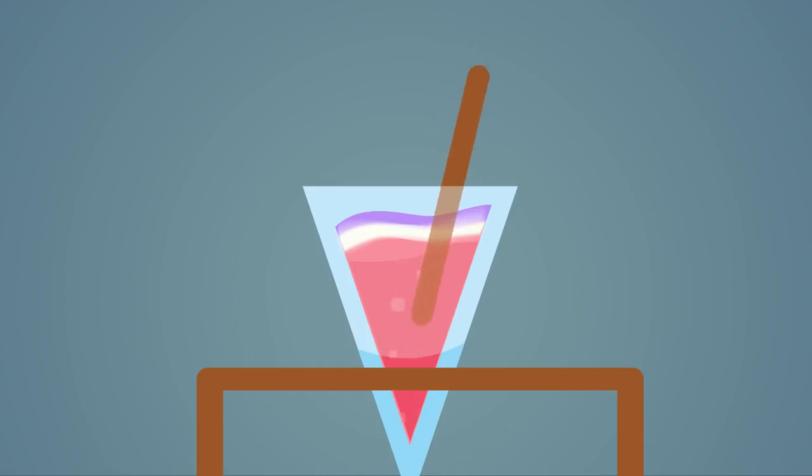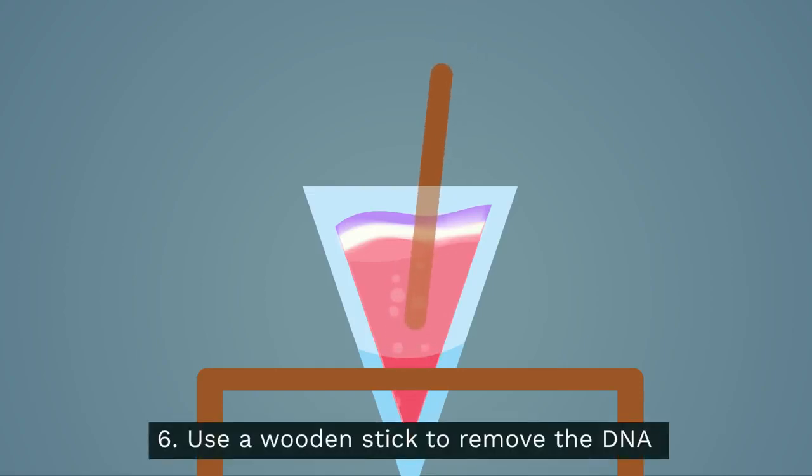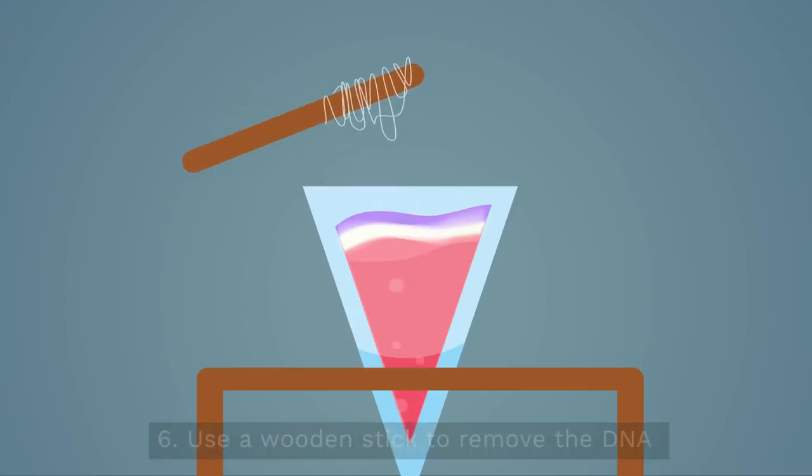You will see cloudy strings of DNA, which you can remove by winding it around a wooden stick. And there, you have extracted DNA. You can then observe this DNA with a microscope or use it for other experiments.